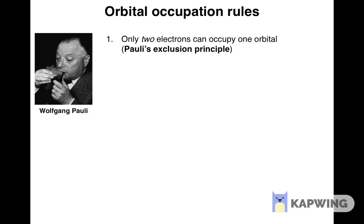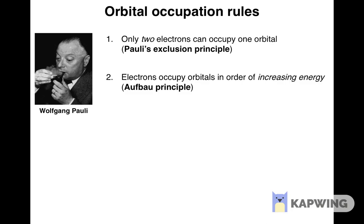The second rule is the so-called Aufbau principle. Aufbau means 'building up' in German. This principle states that electrons occupy orbitals where they have lower energy before they occupy orbitals where they have higher energy. The electrons in all orbitals within the same subshell of the same shell have the same energy.